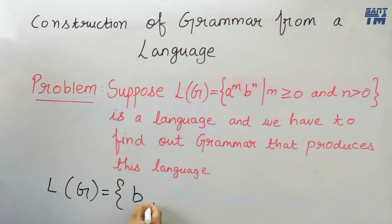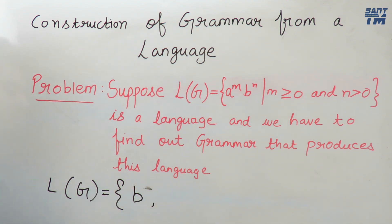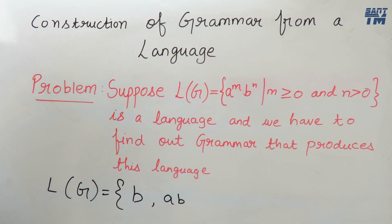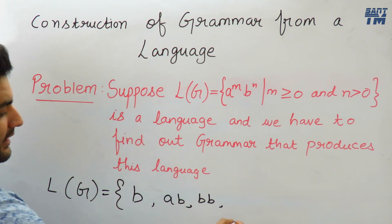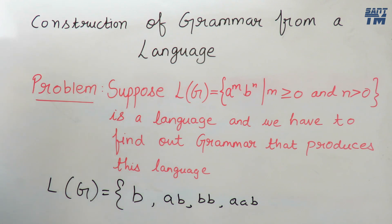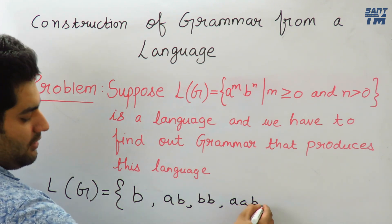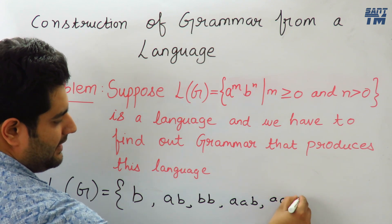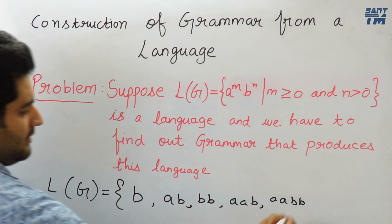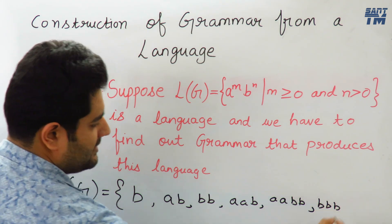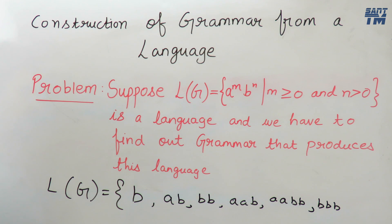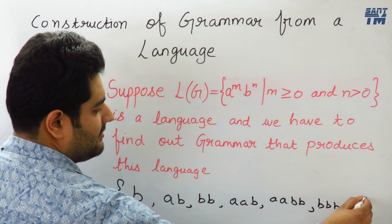The language generated by this grammar will be something like: LG equals the set containing b (where n=1, m=0), or ab (where both m and n are 1), or bb (where m=0 and n=2), or aab (where m=2 and n=1), or aabb (where m=2 and n=2), or bbb (where m=0 and n=3), and so on — many more strings can be generated.